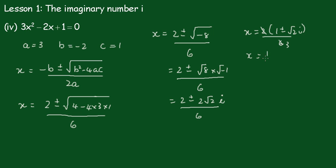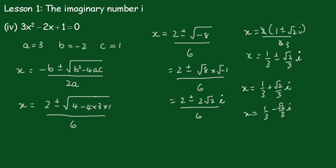So our final solutions are x equals one third plus root 2 i all over 6, and x equals one third minus root 2 i all over 6.